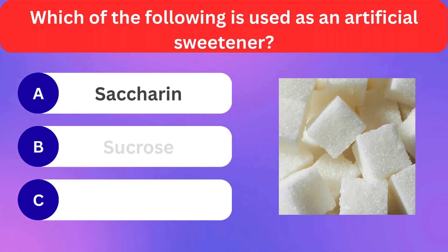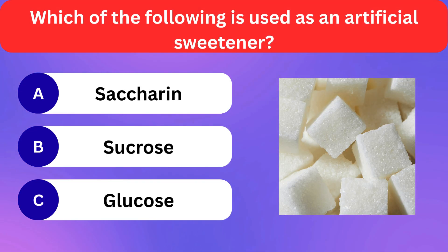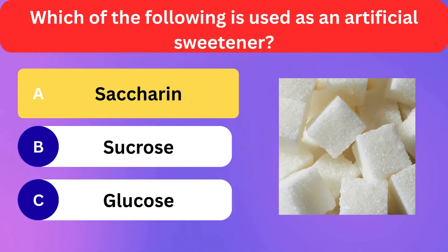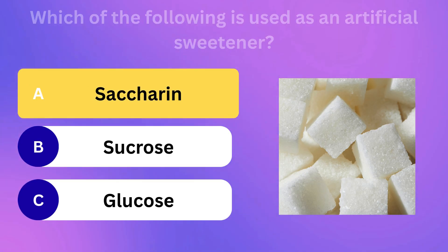Which of the following is used as an artificial sweetener? Saccharin, Sucrose, Glucose. Correct answer is saccharin.